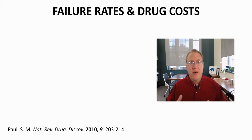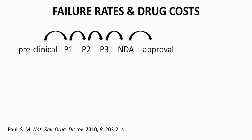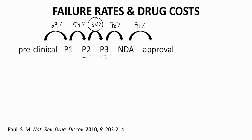For our discussion about failures and costs, I've pulled some data from a publication from scientists at Eli Lilly, and that reference is in the bottom left of this slide. The probability of a lead being advanced from the preclinical stage — animal testing — and into phase 1 trials is 69%. The most challenging step in all these transitions is the movement from phase 2 to phase 3, with a probability of success of only 34%.